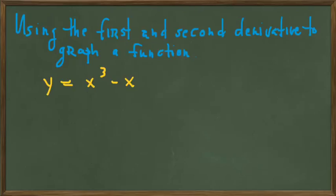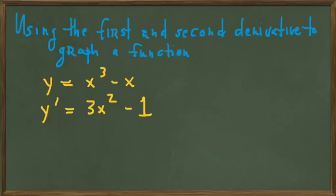So let's first take the derivative of this function, which is easy to do using the rules we've learned — the power rule in this case — and that gives us a first derivative of 3x squared minus 1.